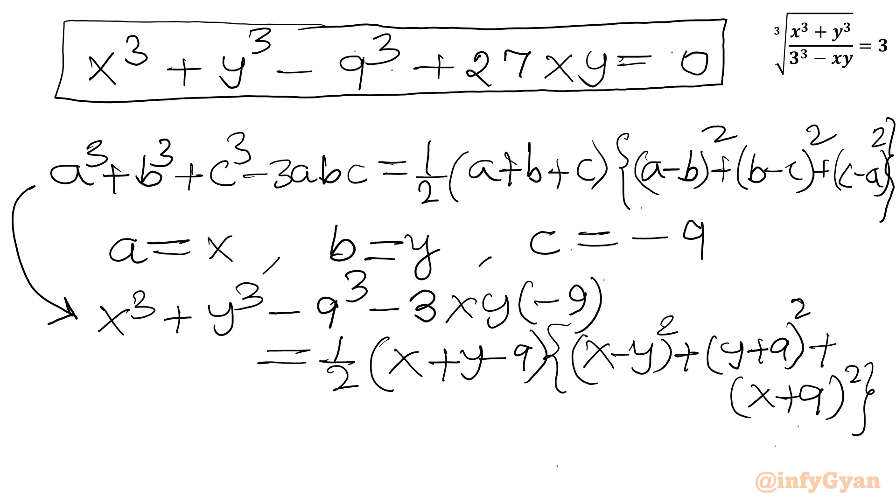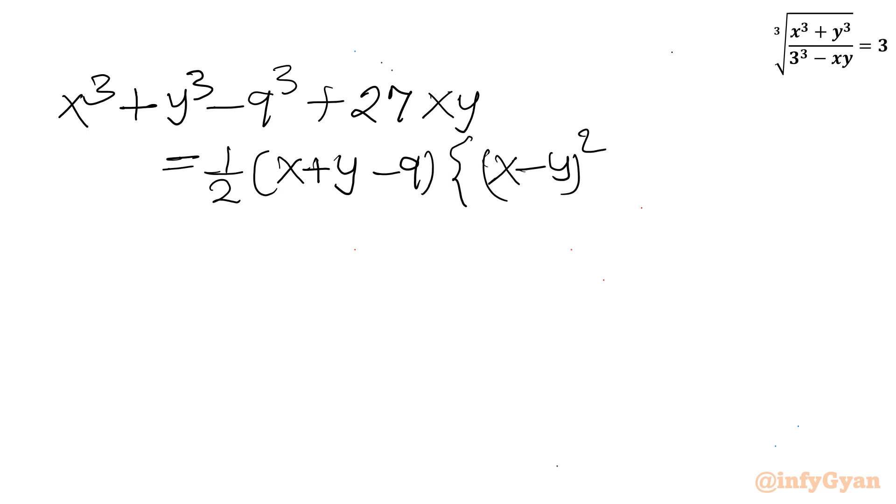Now left hand side if I will write then it would be matching with our equation. Let us write x cube plus y cube minus 9 cube plus 27 x y. And right hand side it is equal to half x cube plus y cube plus x plus 9 whole square. Now this LHS I will put 0 as per our equation.